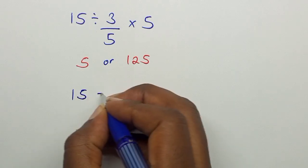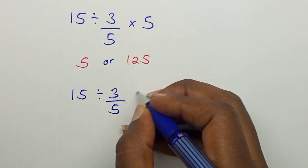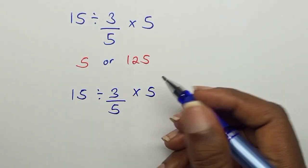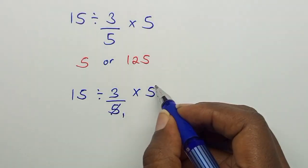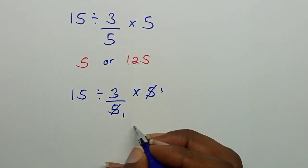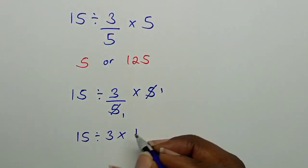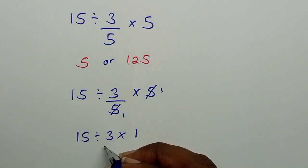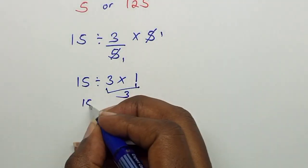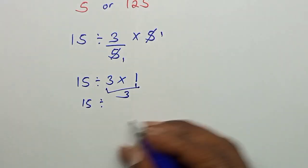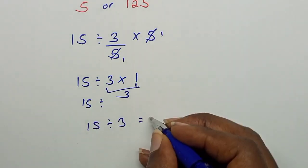So let's continue. We have 15 divided by 3 over 5 times 5. I have 3 over 5 times 5, so this 5 can easily cancel this 5. We are left with 15 divided by 3 times 1. 3 times 1 is 3, so we have 15 divided by 3, which gives us 5.